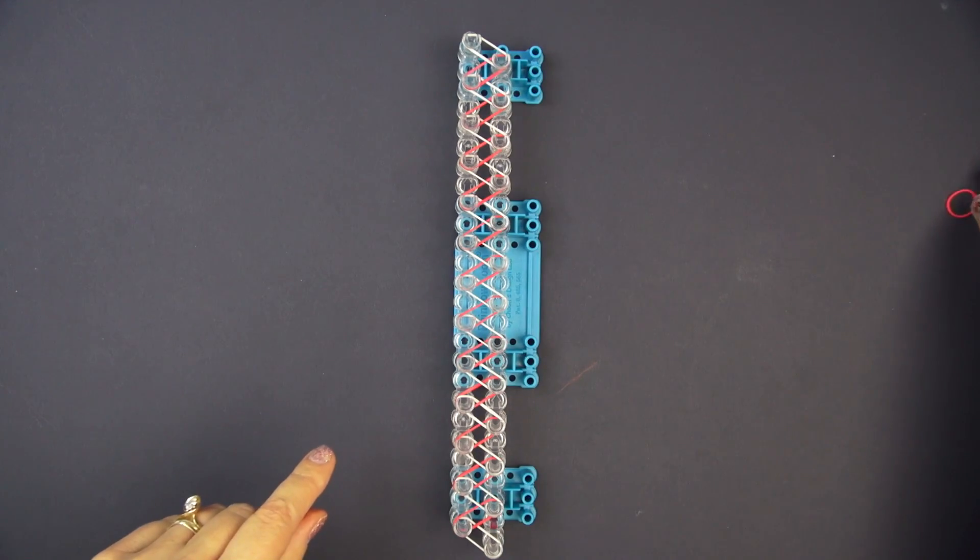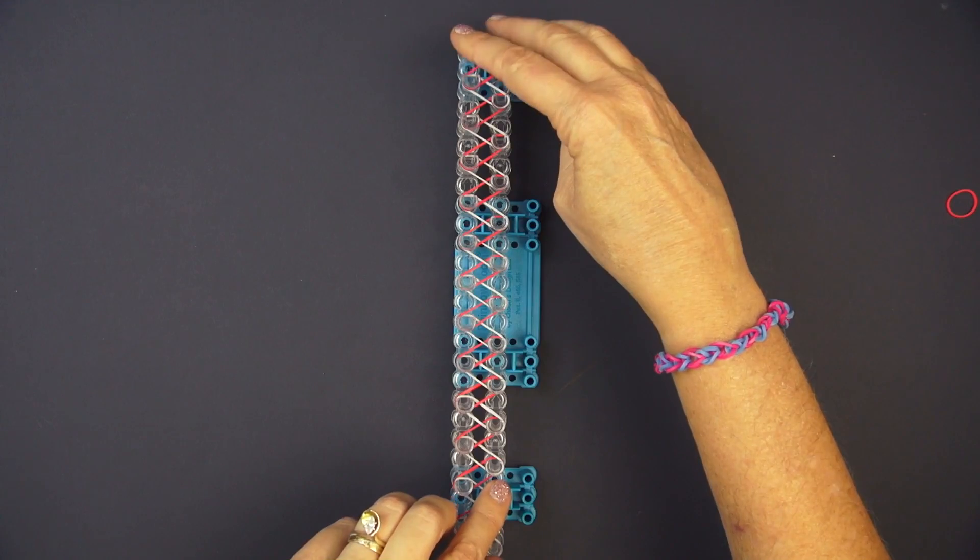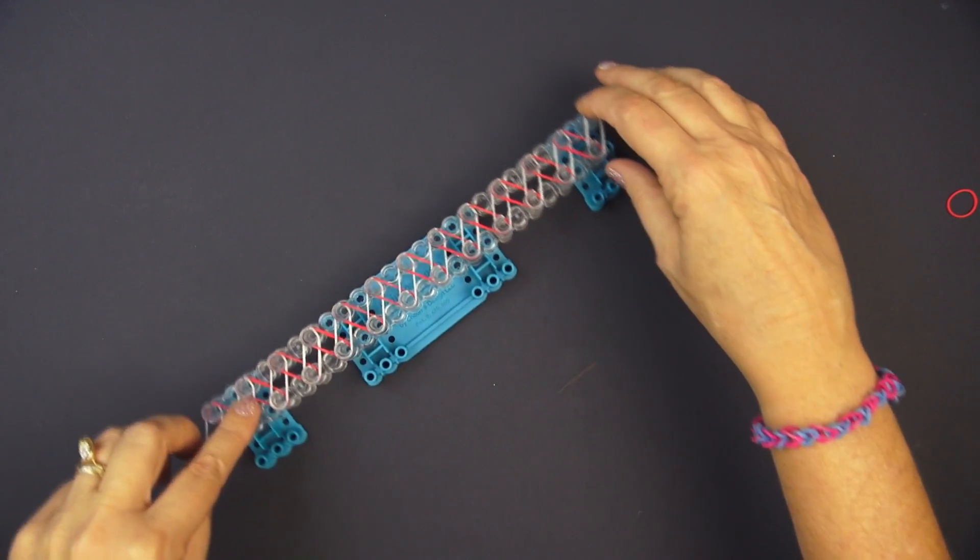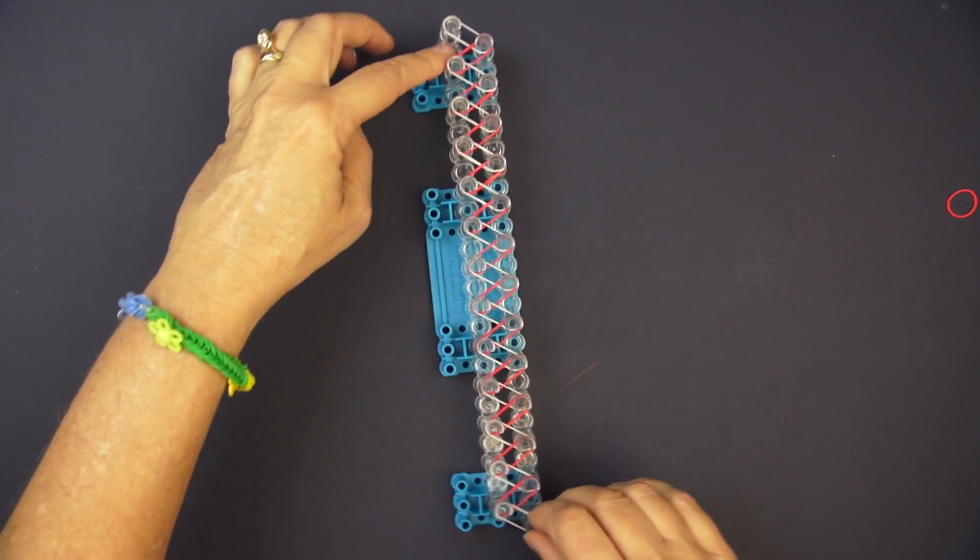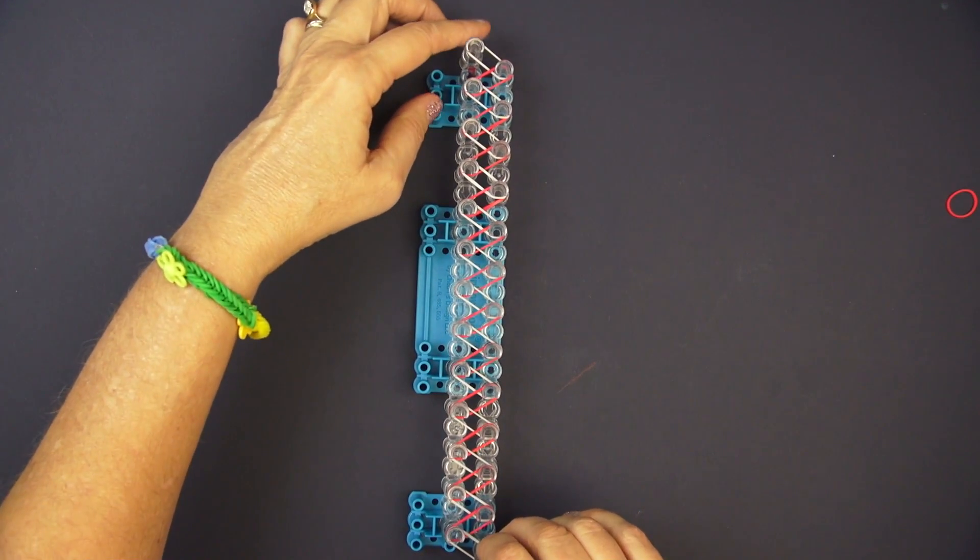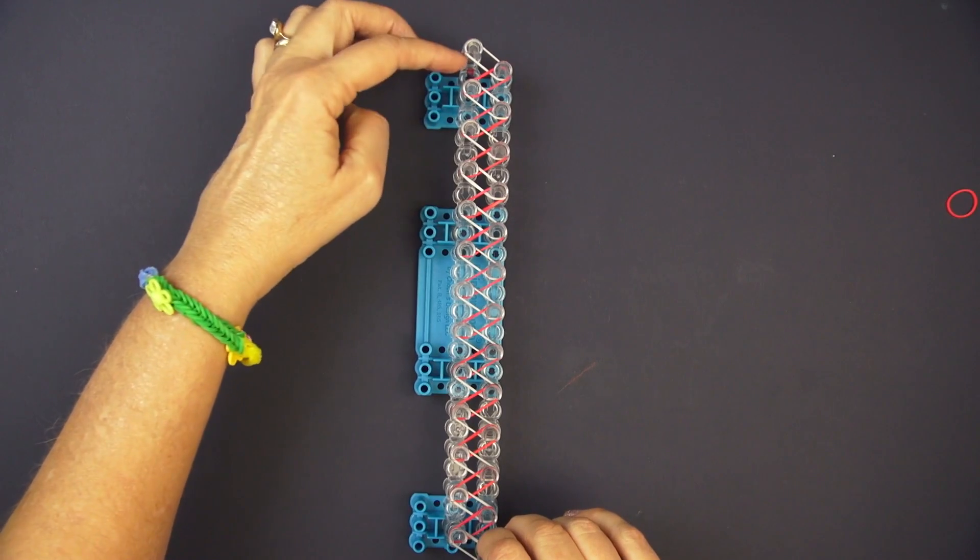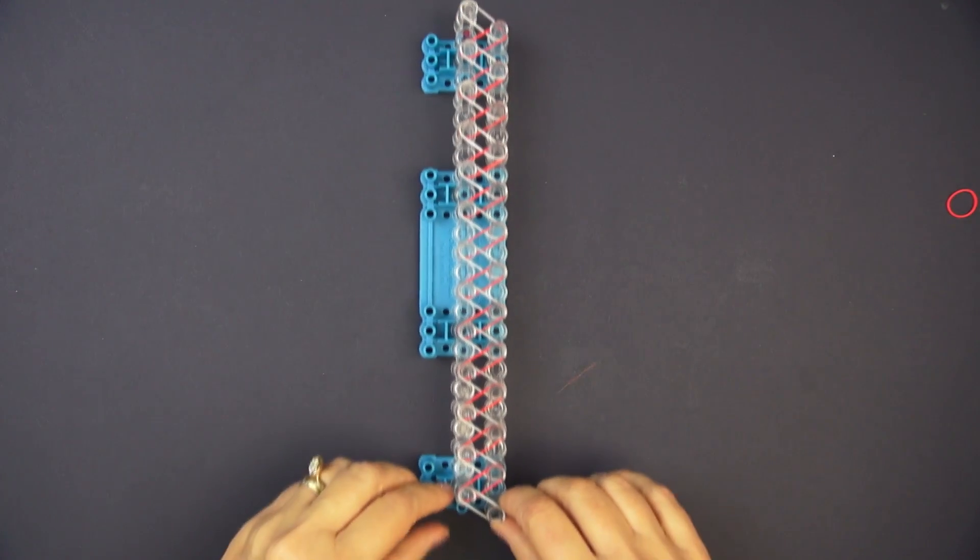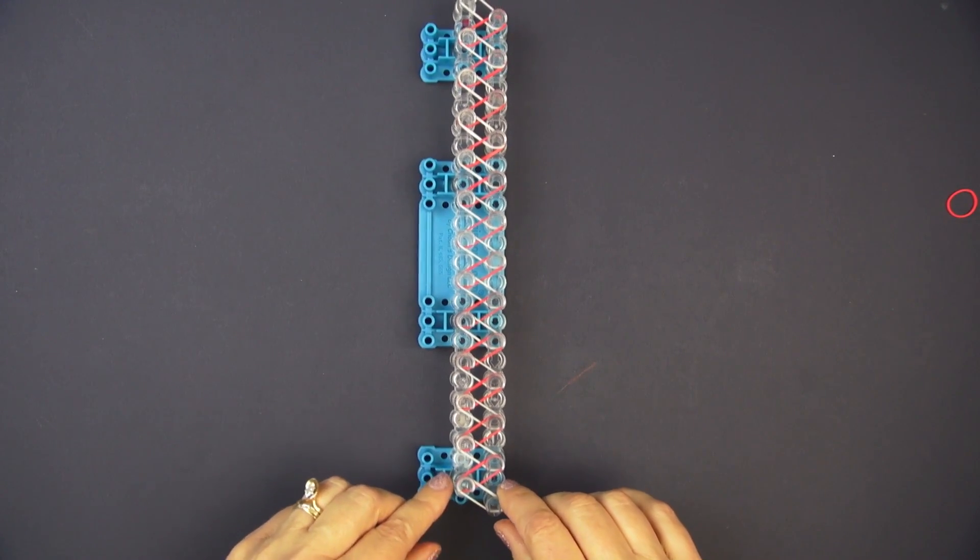Now it's time to turn the loom. This is important because before we do the picking of the rubber bands the loom needs to be facing so that the arrow now is pointing toward you and the loom looks like this.